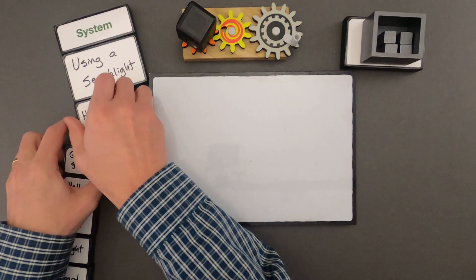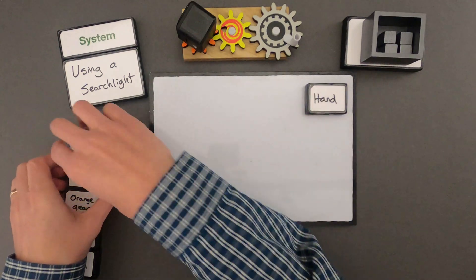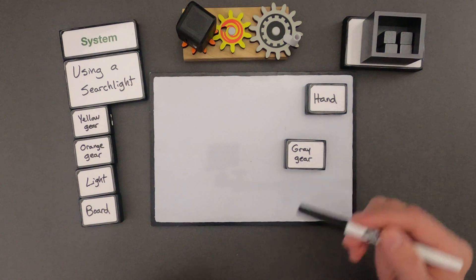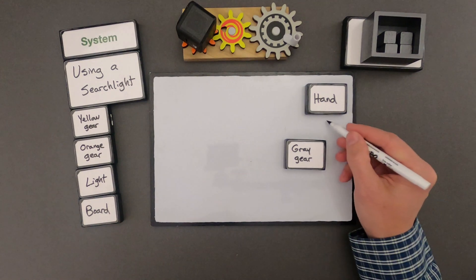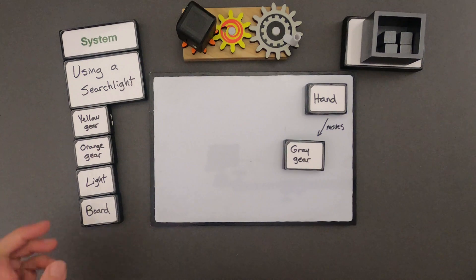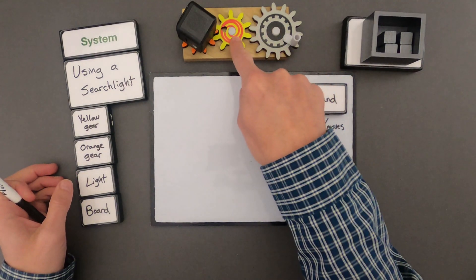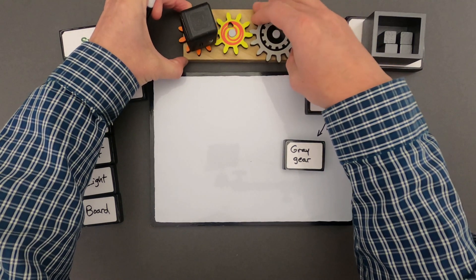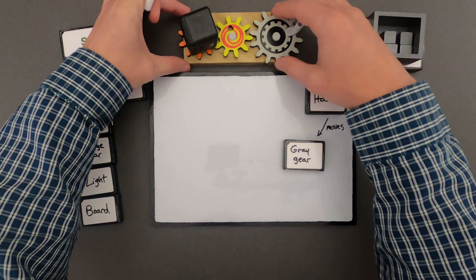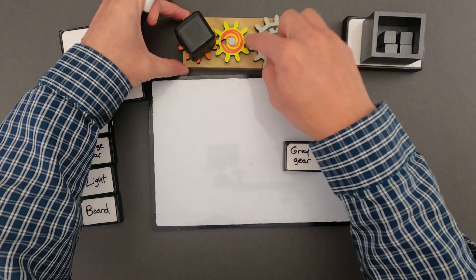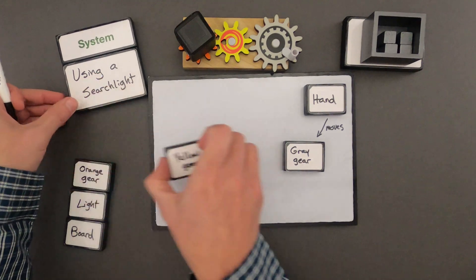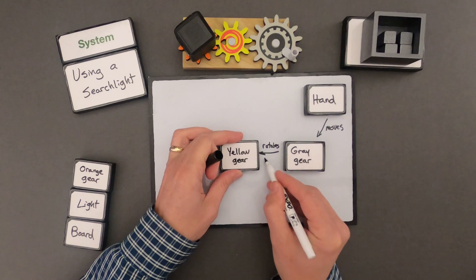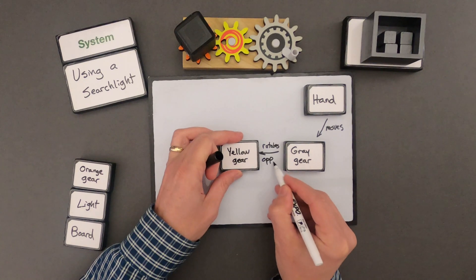The first thing that I would start with is the interaction between my hand and the gray gear. And so my hand moves the gray gear, so I could represent that with an arrow. The next thing that happens is the gray gear is rotating the yellow gear. So as I turn the gray gear, the yellow gear rotates. What I'm noticing is that when I turn the gear in this direction, the yellow gear goes in the opposite direction. So I could say it rotates in the opposite direction.